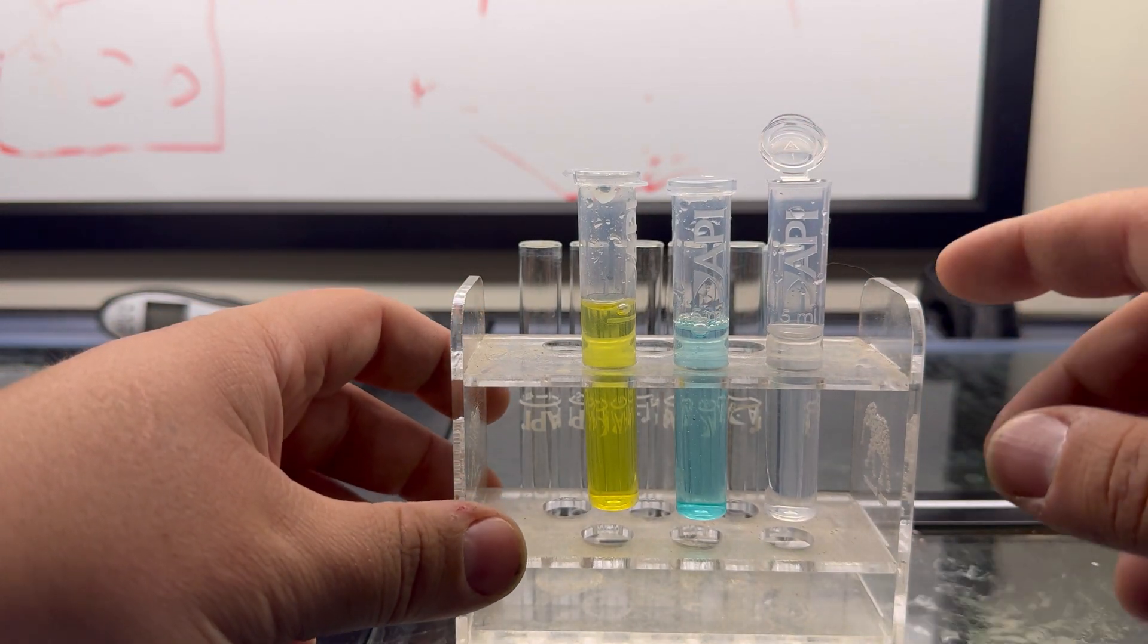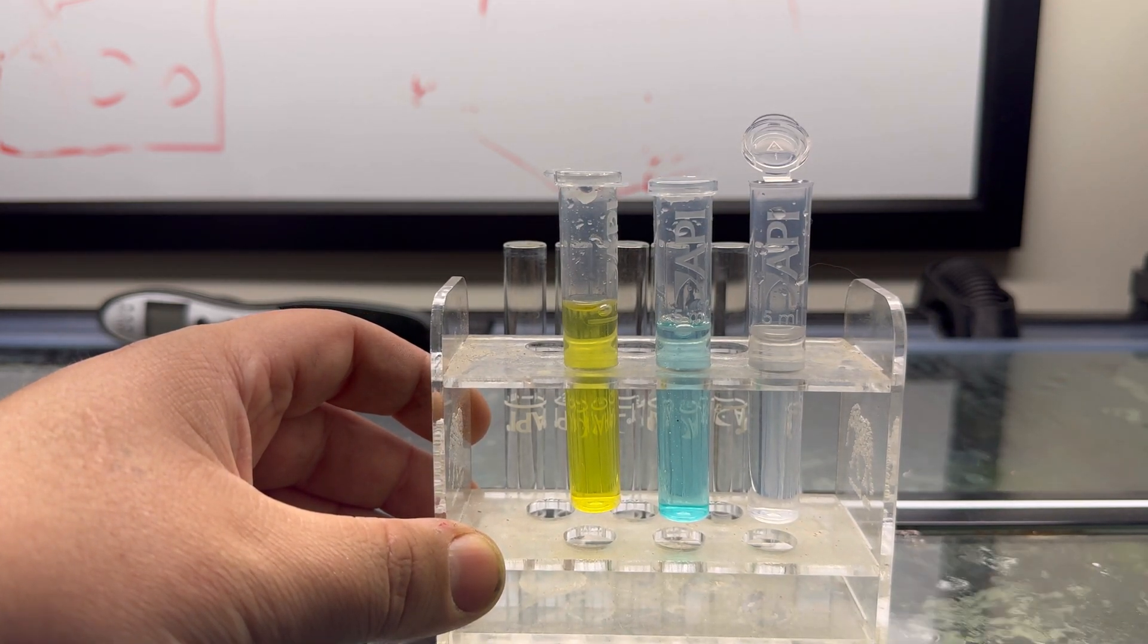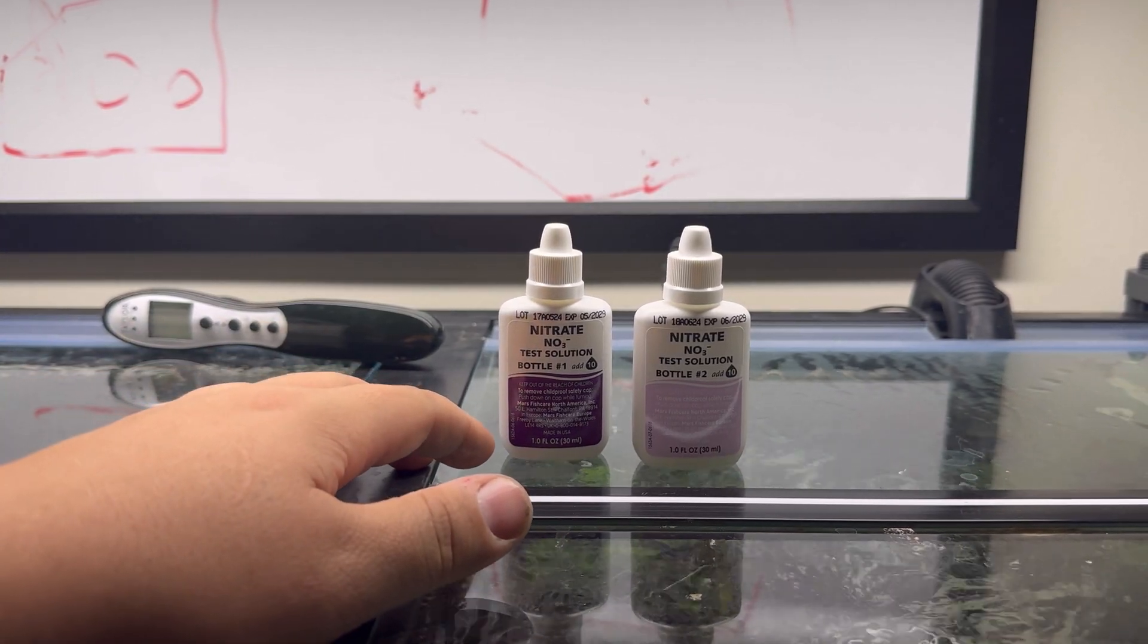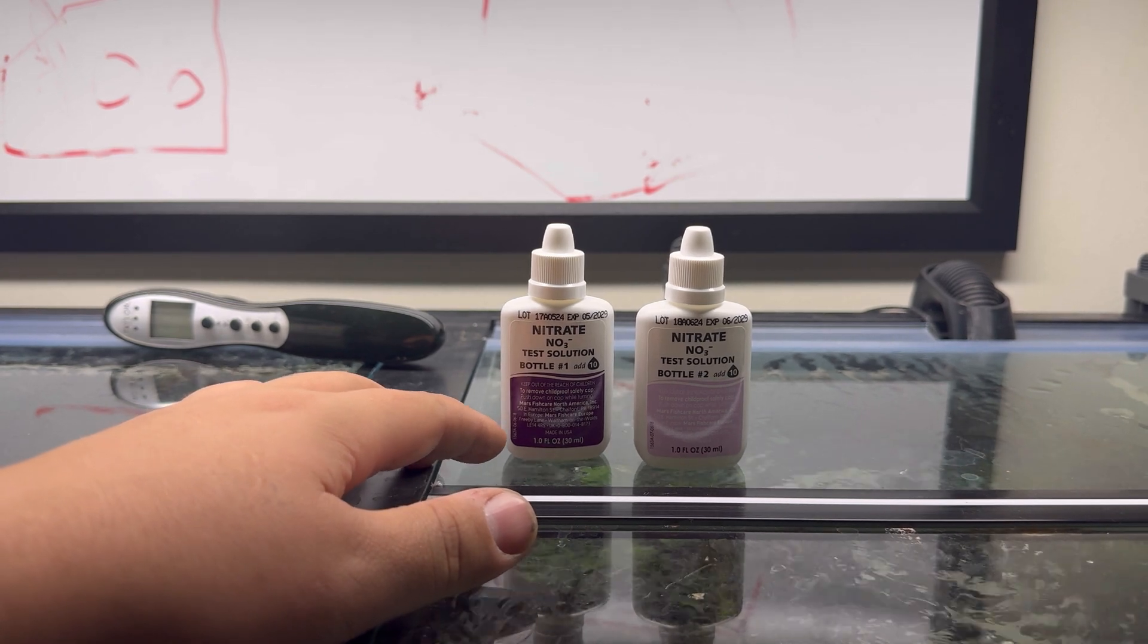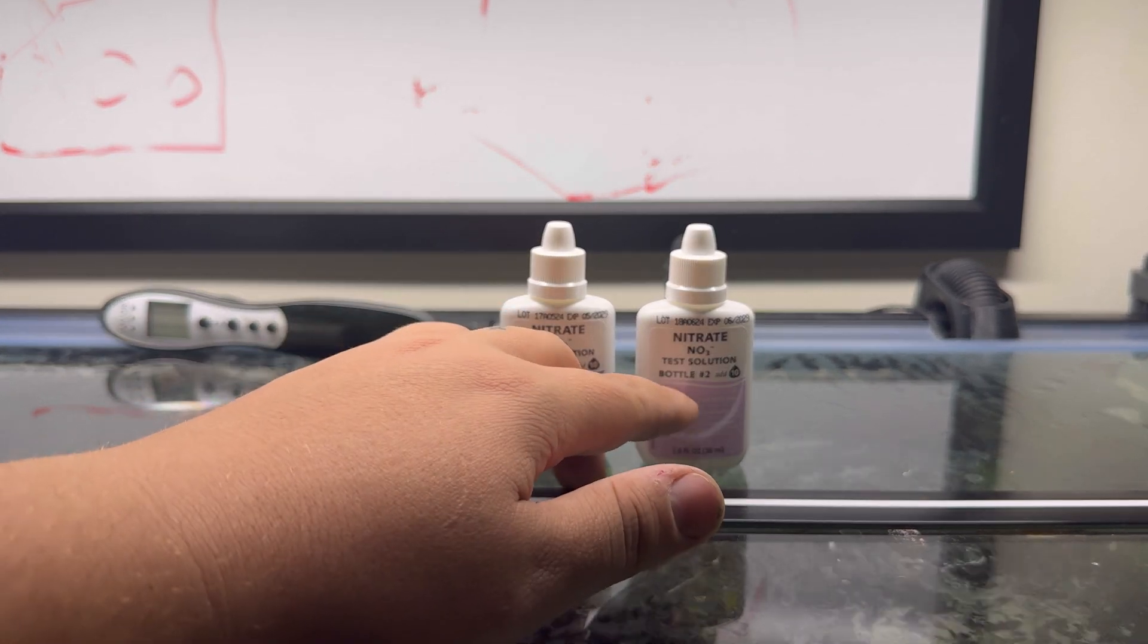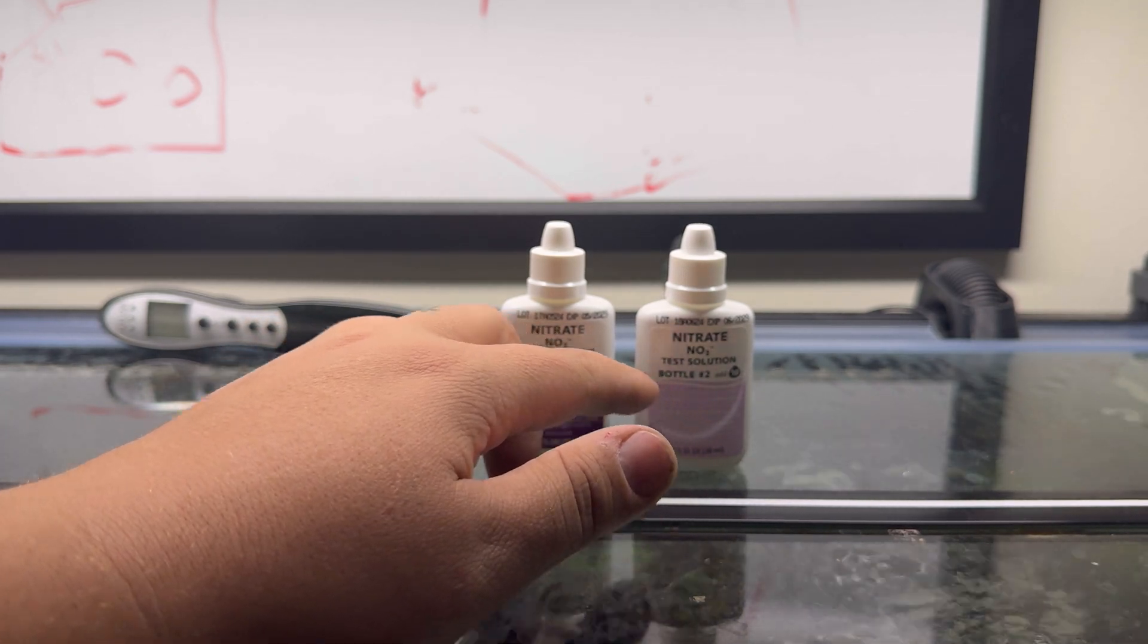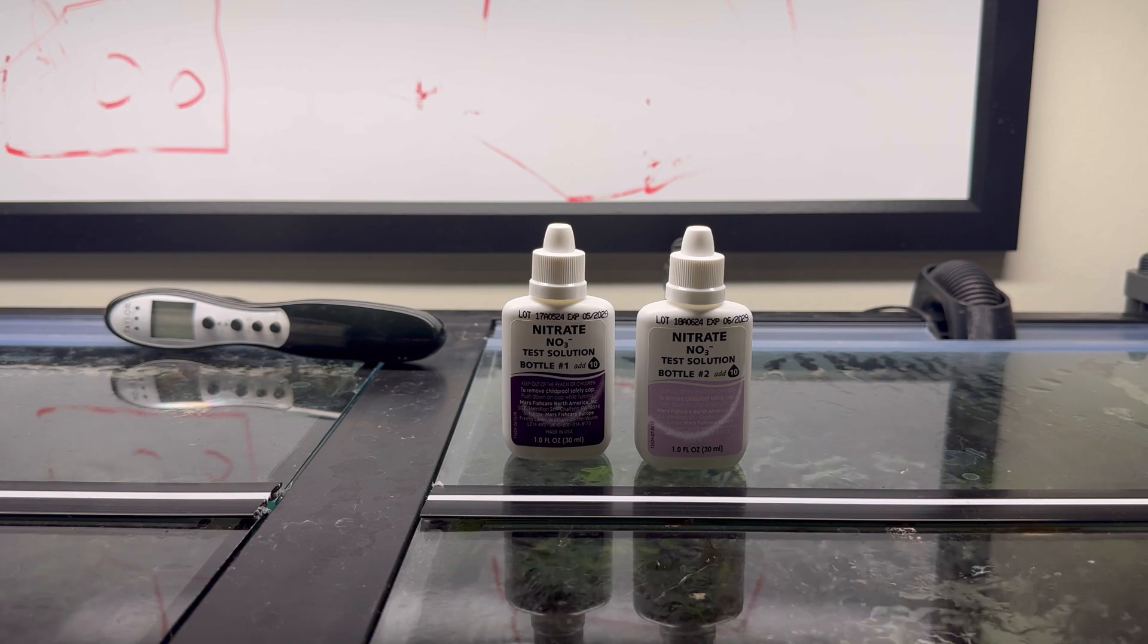Now we're going to jump into nitrate, which is a little bit more complex. I'm going to spend a couple more minutes breaking this one down for you. Again, just like the ammonia test, nitrate is a two-part test containing bottle number one and bottle number two, each of which you need to add 10 drops.